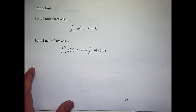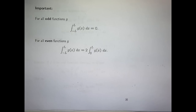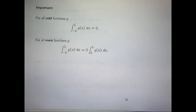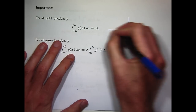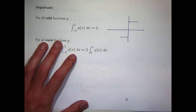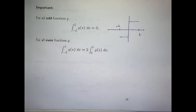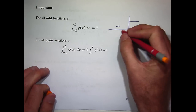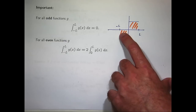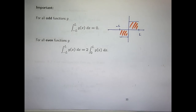Some really important elements: integrals of odd and even functions over symmetric intervals. Suppose I have an odd function g and I integrate it over a symmetric interval, minus L to L — the value is zero. Think about it in terms of area: the signed area on each side will be the same with opposite signs. So if you integrate from minus L to L, the areas cancel and add up to give zero.